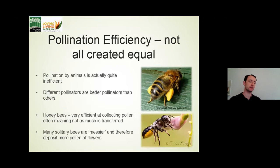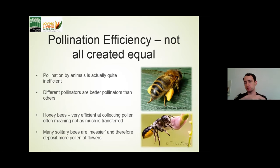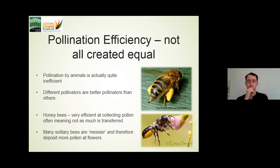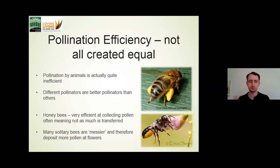Now I want to talk about pollination efficiency. Even within animal-mediated pollination, certain animals are more efficient than others, and that efficiency changes depending on the plant they're visiting. The picture at the top is your standard Western honeybee, with corbiculae stacked full of pollen. Honeybees are very efficient at gathering pollen, but what that means is that the vast majority of that pollen will not be passed on — it'll be taken back to the hive to feed their offspring and will never be used in a pollination interaction.